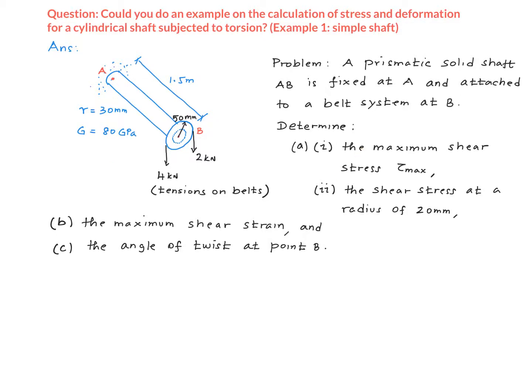And these are the questions. First, we want to find the maximum shear stress in the shaft. Then we want to find the shear stress at a radius of 20 mm. Then, we want to find the maximum shear strain in the shaft. And finally, we want to find the angle of twist at point B.